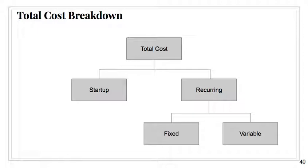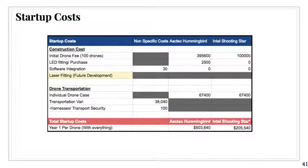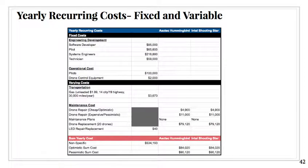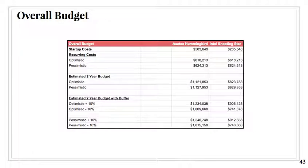Next, we have the total cost breakdown, which was divided into startup and recurring costs, and then recurring went into fixed and variable costs. The startup costs were divided into construction costs and drone transportation, and basically ended up being about $500,000 for the Aztec Hummingbird. Next were the yearly recurring costs for fixed and variable prices, and that was shown in the black boxes, or the black lines. We divided this also into optimistic and pessimistic values because for maintenance, you never know what can happen, which was about $90,000 for the Aztec Hummingbird. That led us to our overall budget. For two years, it would be about $1 million to $1.2 million, depending on how optimistic or pessimistic our values are.